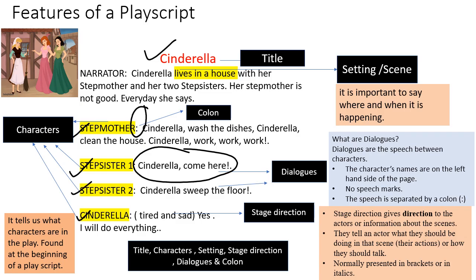It is important to say the dialogues — it is a speech between the characters. The characters' names are on the left hand side of the page and there will be no speech marks. It will be separated by a colon. Stage direction gives direction to the actors, gives information about the scenes, and tells what the actor should do in that particular scene. It is normally presented in italics.